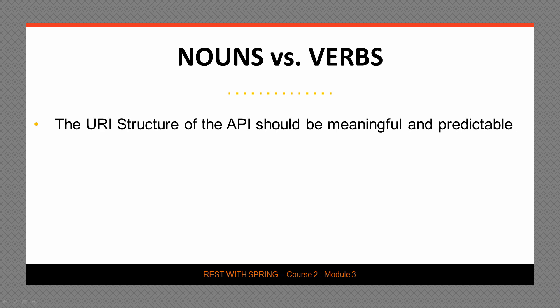We're going to hit a few points here, starting with the fact that the URI structure of a solid API should be as meaningful and as predictable as possible. The idea is to have something that the user and the client of that API can reasonably guess, predict, and easily understand. And that usually leads to a very clean, well-structured API namespace.